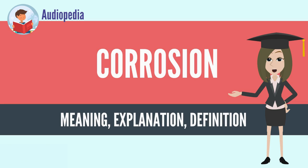Corrosion can be concentrated locally to form a pit or crack, or it can extend across a wide area, more or less uniformly corroding the surface. Because corrosion is a diffusion-controlled process, it occurs on exposed surfaces.